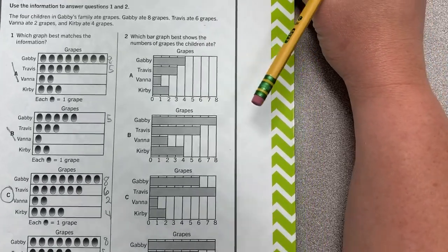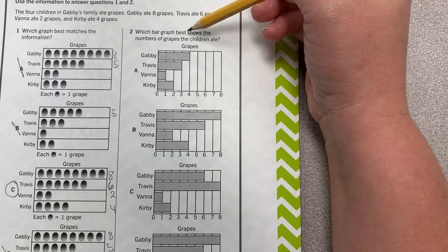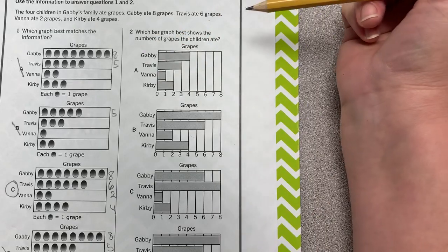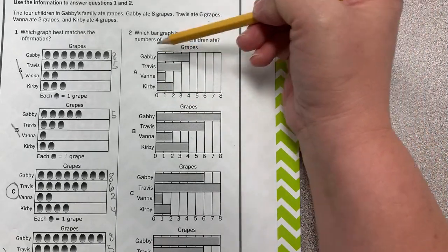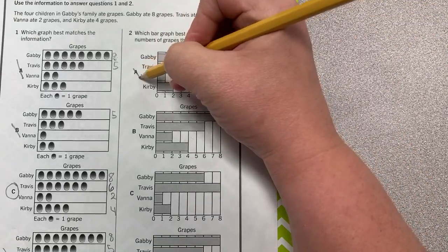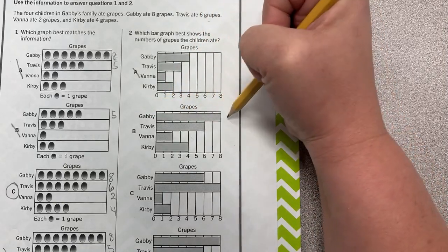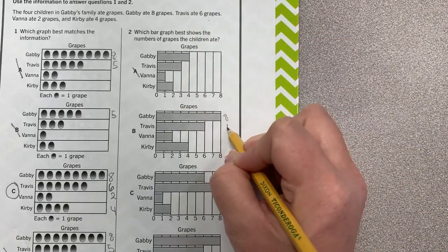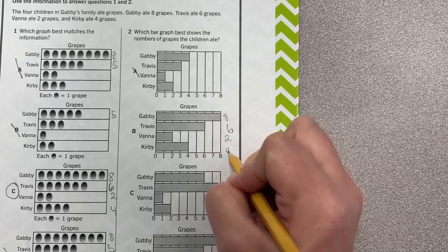Okay dokey. Number two. Which bar graph best shows the number of grapes the children ate? Okay, so now we're moving on to bar graphs. Let's look at our intervals. We're counting by ones. Okay, Gabby needs eight. Up, it shows four. That's not right. Let's look at B. Gabby has eight. Okay, good. Travis has six. Alright, so far so good. Vanna has two. Alright. Kirby has four. Well, I think that's correct.